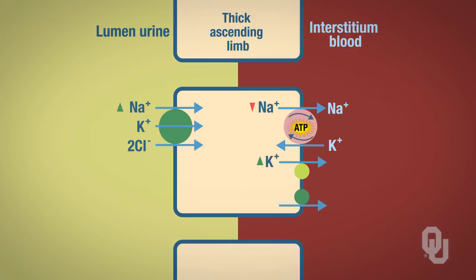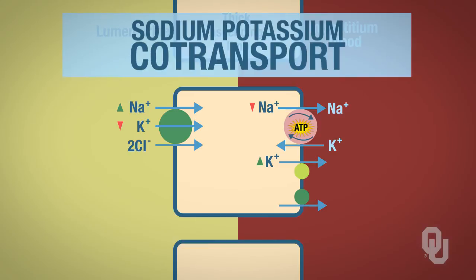What this diagram is showing is that you can transport potassium using this transporter here. Potassium would go from a low concentration in the lumen to a high concentration in the cytoplasm of the cell. So this is sodium-potassium co-transport — a type of secondary active transport.